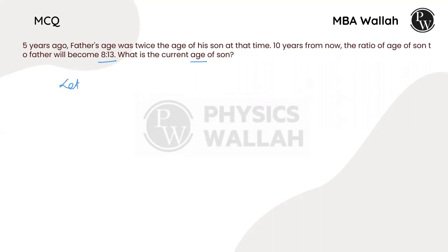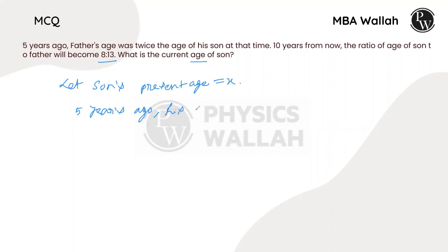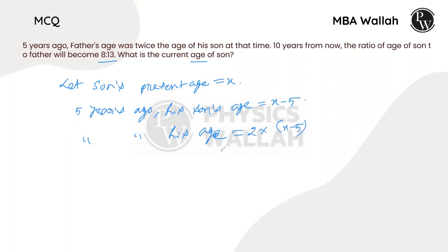Let his son's present age be x. Therefore, 5 years ago, his son's age was x-5. It is given that father's age 5 years ago was twice the age of his son. Therefore, 5 years ago, his age is 2 times (x-5).